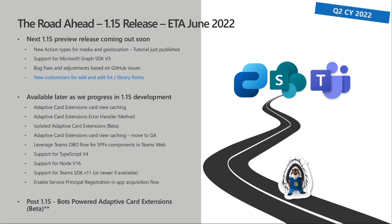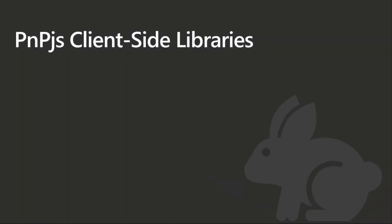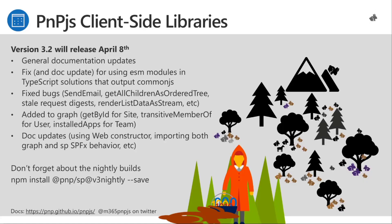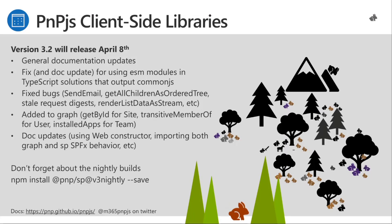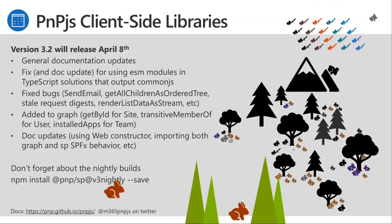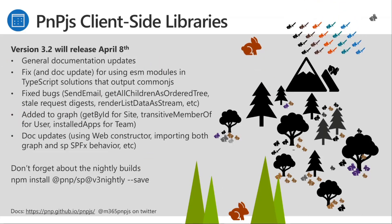PnPJS Client-Side Library version 3.2 will be released on April 8th — that's tomorrow, this Friday. It's got a lot of great stuff: good fixes, fantastic documentation updates. We've also got ESM for Node 12, 14, 16 sorted out — we had some friction there when we first released. We'll have all the details in the change log and the docs once we get those things pushed out. We do have a nightly build: npm install @pnp/sp@v3-nightly. Those are built nightly but give you a chance to try out bug fixes before the major release.